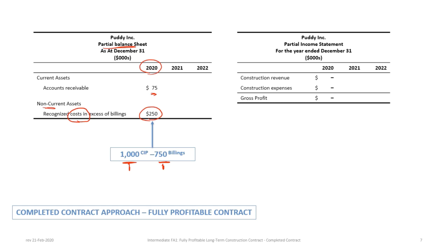On the 2020 income statement, there is zero construction revenue, zero expenses, and zero gross profit. We've incurred expenses but have not recorded them as construction expense. Under the completed contract method, there is no journal entry to construction expense — that only occurs under the percentage of completion method, where construction revenue and expense are recorded and the difference is the gross profit. With completed contract, we don't do that until the final year.